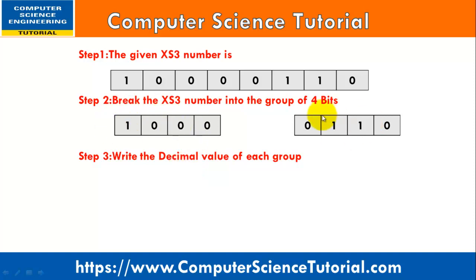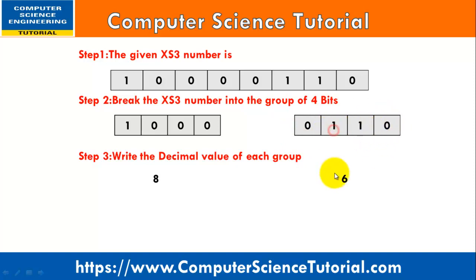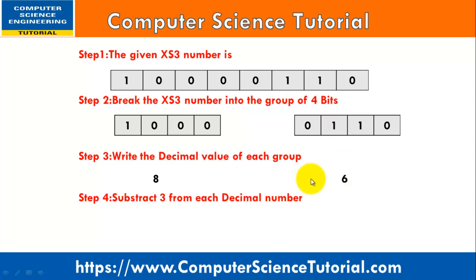Step 2 and 3: convert each group into its decimal value. When I convert 1000 from binary to decimal it returns 8. Similarly, when I convert 0110 from binary to decimal it returns 6.